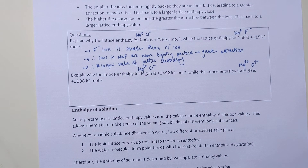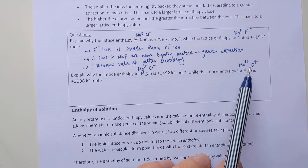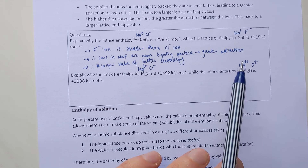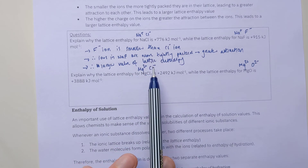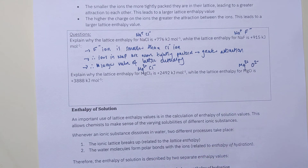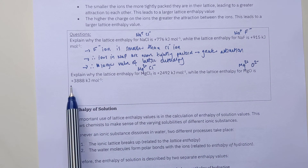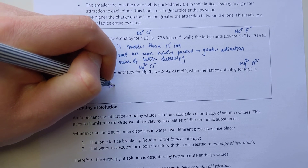The second problem: explain why the lattice enthalpy for magnesium chloride is +2492 while the lattice enthalpy for magnesium oxide is +3888. Comparing the ions, we have Mg²⁺ and Cl⁻ versus Mg²⁺ and O²⁻. Magnesium is the same in both cases, but the anion is different — only a 1− charge for chloride versus a 2− charge for oxide. The higher the charge on your ions, the greater the attraction, therefore it takes more energy to break them apart. We see that in the values — with a 2+/2− interaction we get a larger lattice enthalpy than with a 2+/1− interaction.